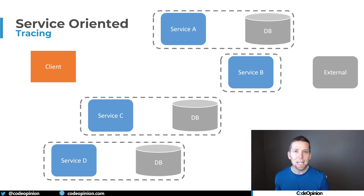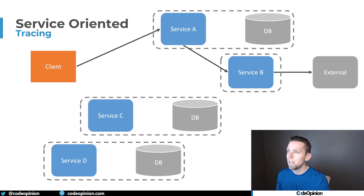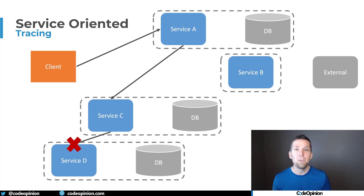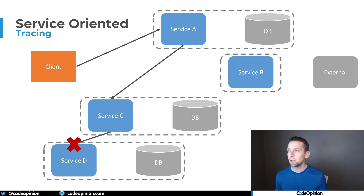Distributed tracing in this case is a band-aid — it's actually showing you that you have all of this temporal coupling. That means everything needs to be online and available simultaneously. If service C calls service D and it's unavailable, we have to deal with failures everywhere. If service B or C was making state changes, how do we roll all that back? We don't have a distributed transaction. All of this temporal coupling is the problem.